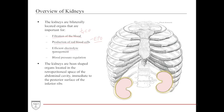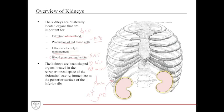The kidneys also help with efficient electrolyte management. Depending on whether the body is in deficit or excess of certain electrolytes, the kidneys will either excrete or reabsorb them. Finally, the kidneys help with blood pressure regulation via the RAS system — the renin-angiotensin-aldosterone system. Based on sodium concentration and blood entering the kidneys, renin is secreted, which leads to production of angiotensin 1, then angiotensin 2 in the lungs, then aldosterone in the adrenal glands, which goes back to the kidneys to regulate blood pressure.